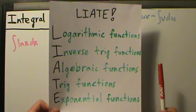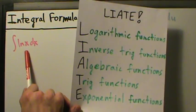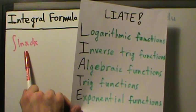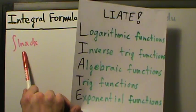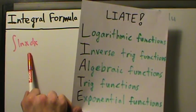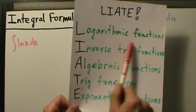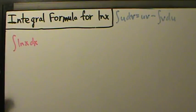So choose u to be the first thing that appears on this list. Okay, well, what do we have here? Really, we only have one function. It's logarithmic. But technically speaking, you could think of this as lnx times 1, so the 1 would be the other function. But we don't really have to get that technical or that crazy with it. But logarithmic function, it's the first thing on the list. That's great. So just choose u to be that.